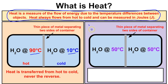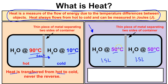After a couple of hours, the hot water transfers some of its thermal energy — its heat — to the cold water. Heat is always transferred from hot to cold, never the reverse. The temperature of the left side will end up being 50 degrees Celsius and the right side will also be 50 degrees Celsius, provided we have the same amount of water on each side — say 1.5 liters on each side.